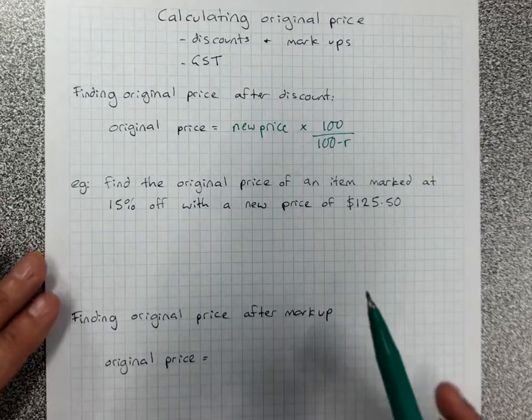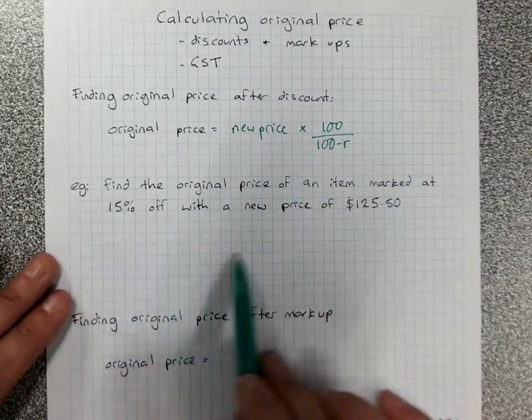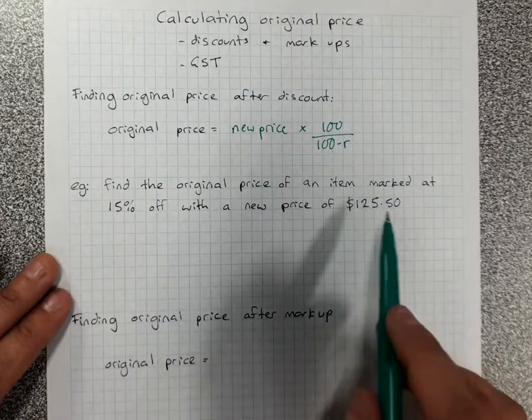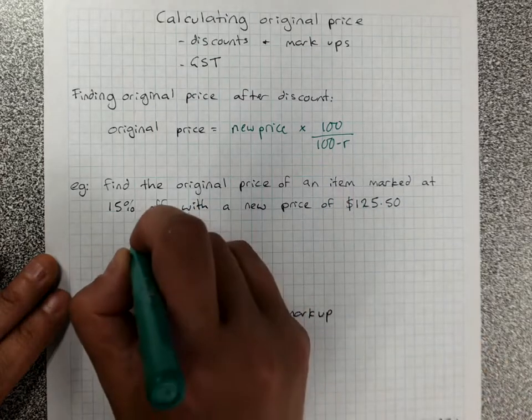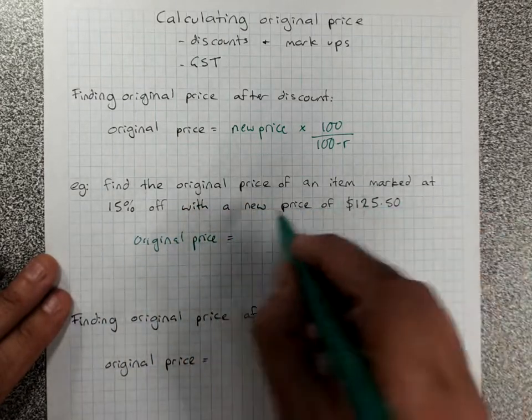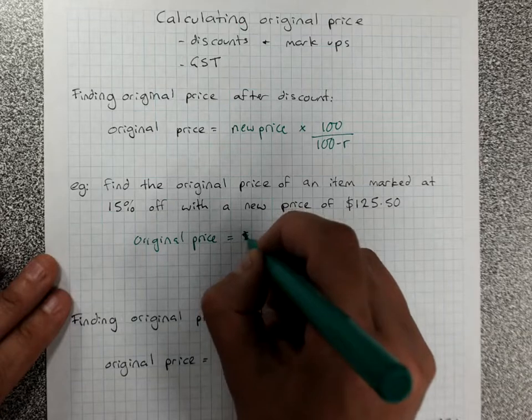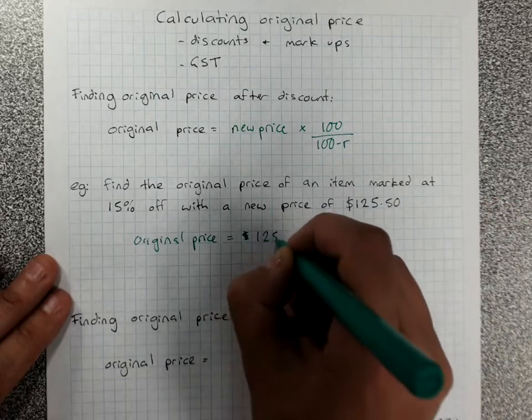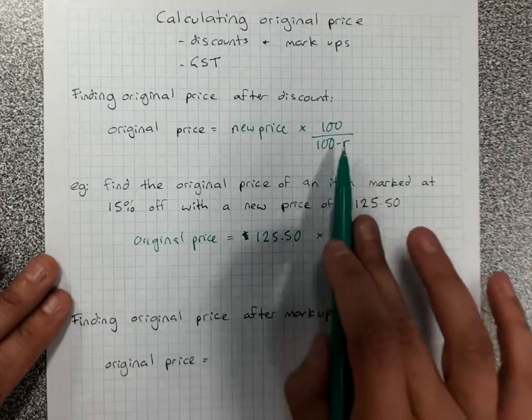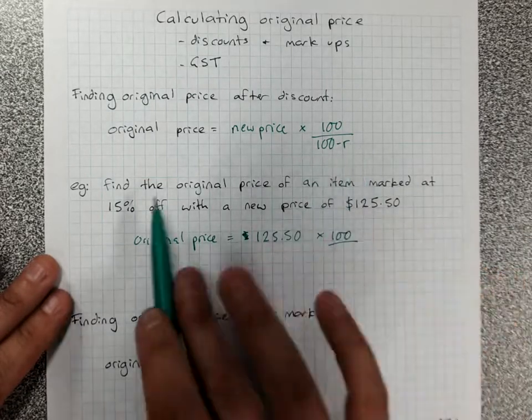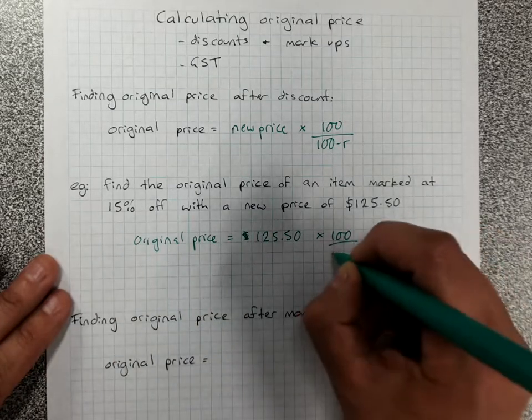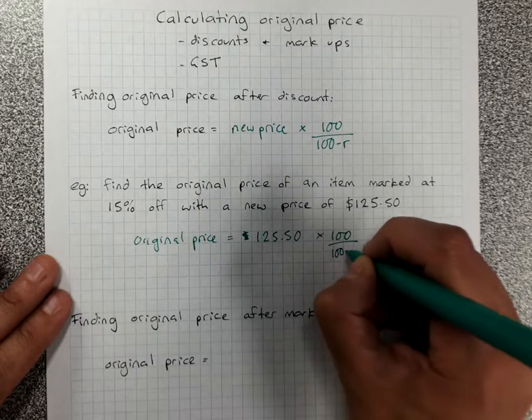So this formula will work. So here find the original price of an item marked at 15% off when this is the new price. The new price, don't need dollar signs in our working, 100 over, now it's 100 percent minus the 15%. You can have it as 85 or you can simply write in here 100 minus 15.